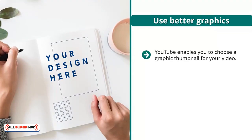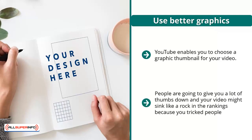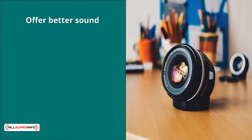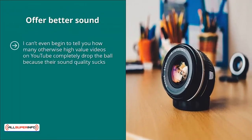Tip four: use better graphics. YouTube enables you to choose a graphic thumbnail for your video — pick one that will get clicks, but don't take it too far. Don't put scantily clad women when your video is actually about dog training; people will give you thumbs down and your video might sink in the rankings because you tricked them. Instead, find the most attention-grabbing graphic or screenshot from the video itself to use as your thumbnail.